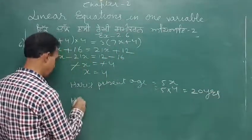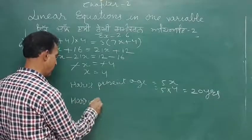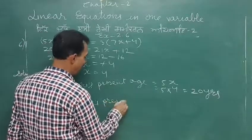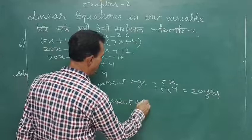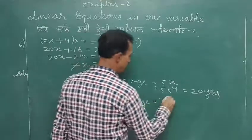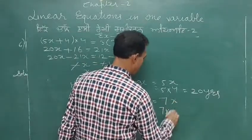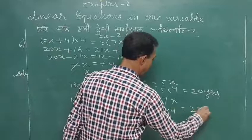Harry's present age is equal to 7x, so 7 into 4. This comes out to 28 years.